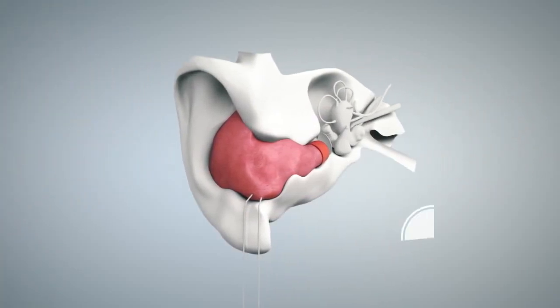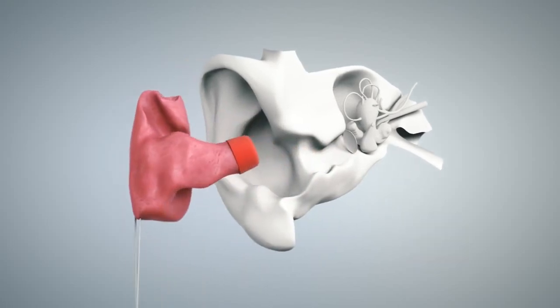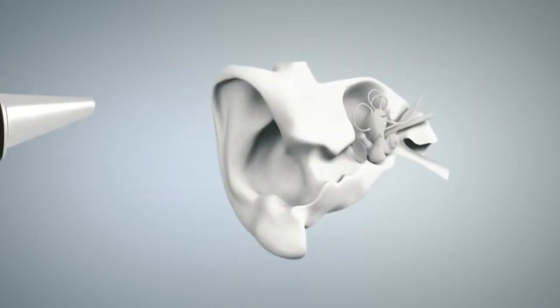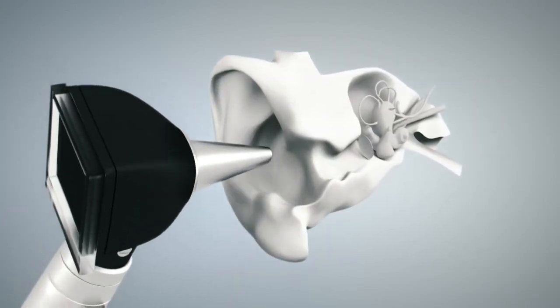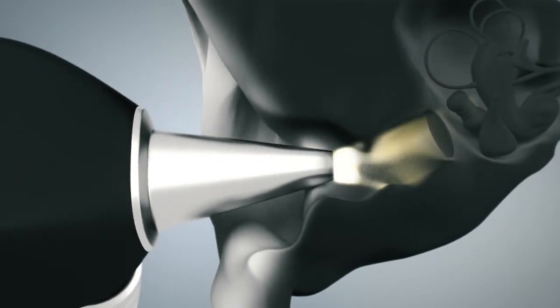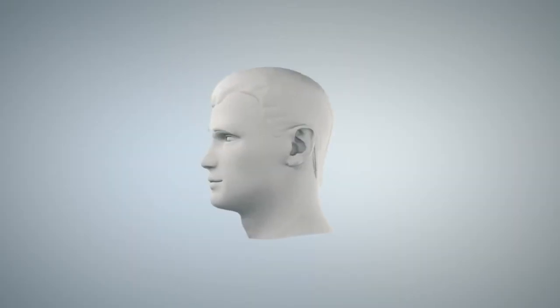Wait for the silicone to harden, then take the impression out of the ear just like any other ear impression. Note how the dome is now part of the ear impression. Don't cut it off. As usual, inspect the ear canal after the impression has been removed. And that's it. No discomfort for the patient and no technical difficulty for you.